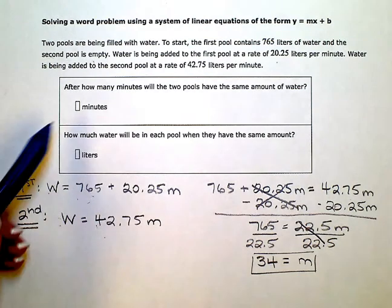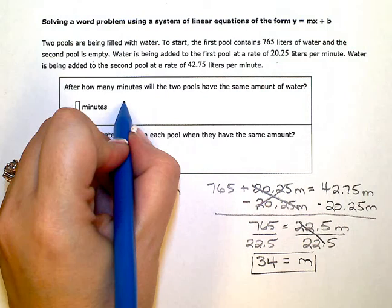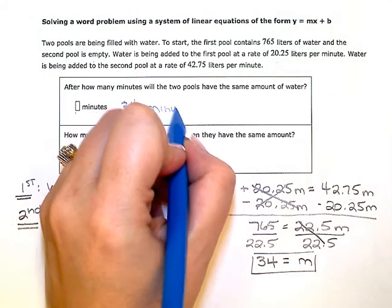So after how many minutes will the two pools have the same amount of water? The answer is 34 minutes.